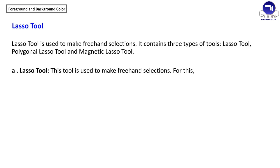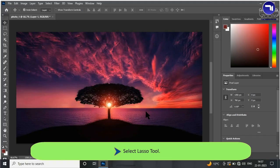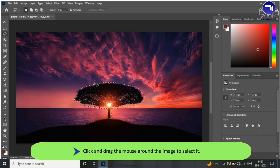The Lasso tool is used to make freehand selections. It contains three types of tools: Lasso tool, Polygonal Lasso tool, and Magnetic Lasso tool. To use the Lasso tool, select it, then click and drag the mouse around the image to select it.